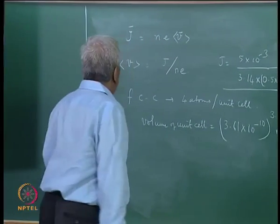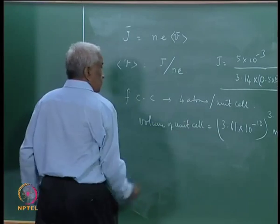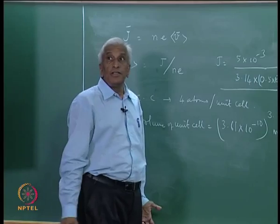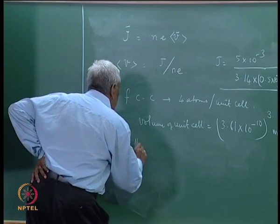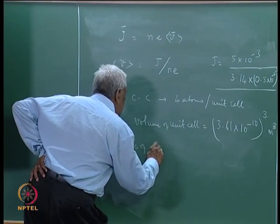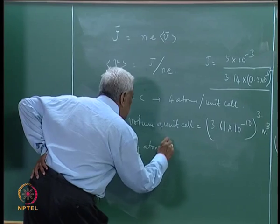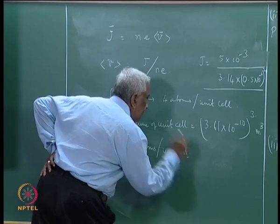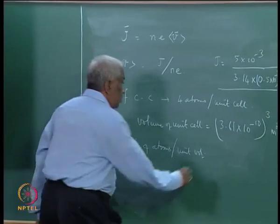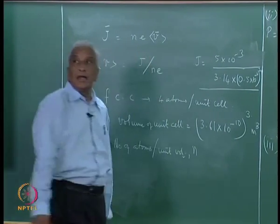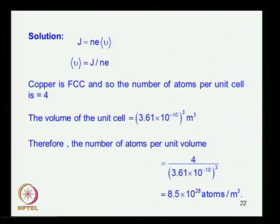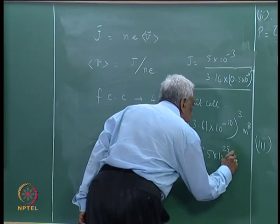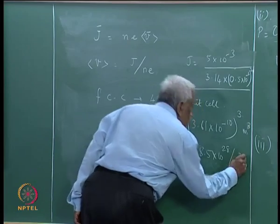Therefore, we can calculate the number since there are 4 atoms in the unit cell. What is the number of atoms per unit volume? That is what we call as n, and that turns out to be 8.5 into 10 to the power 28 per meter cubed.